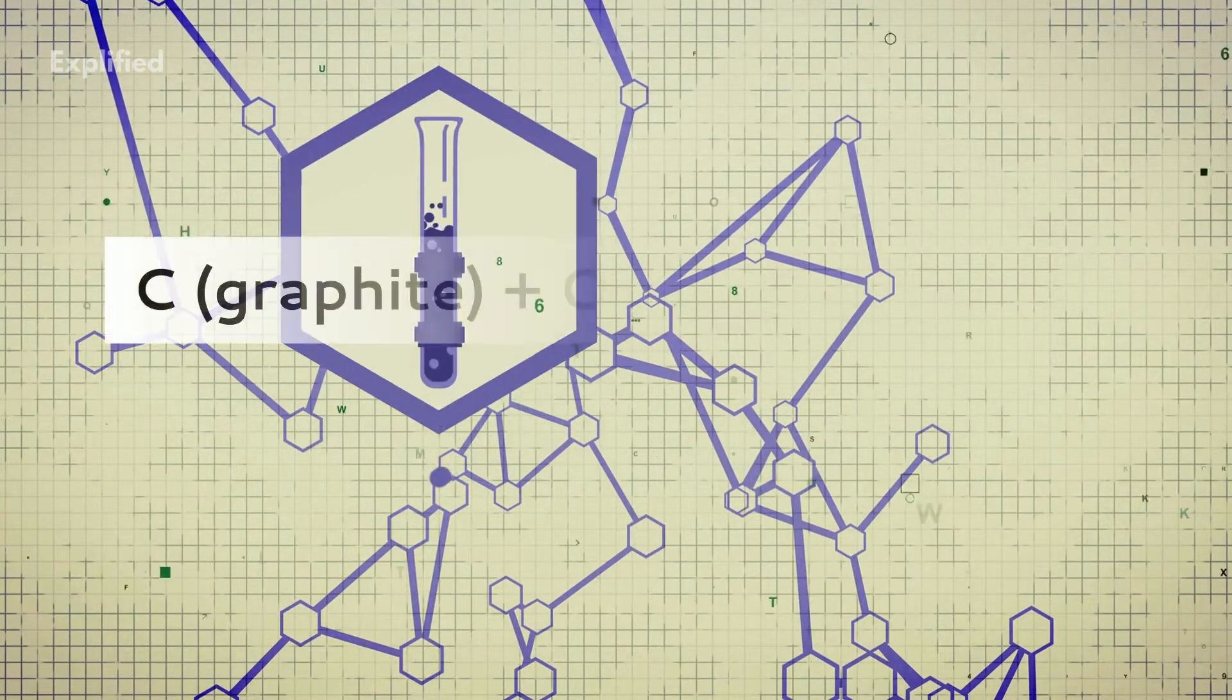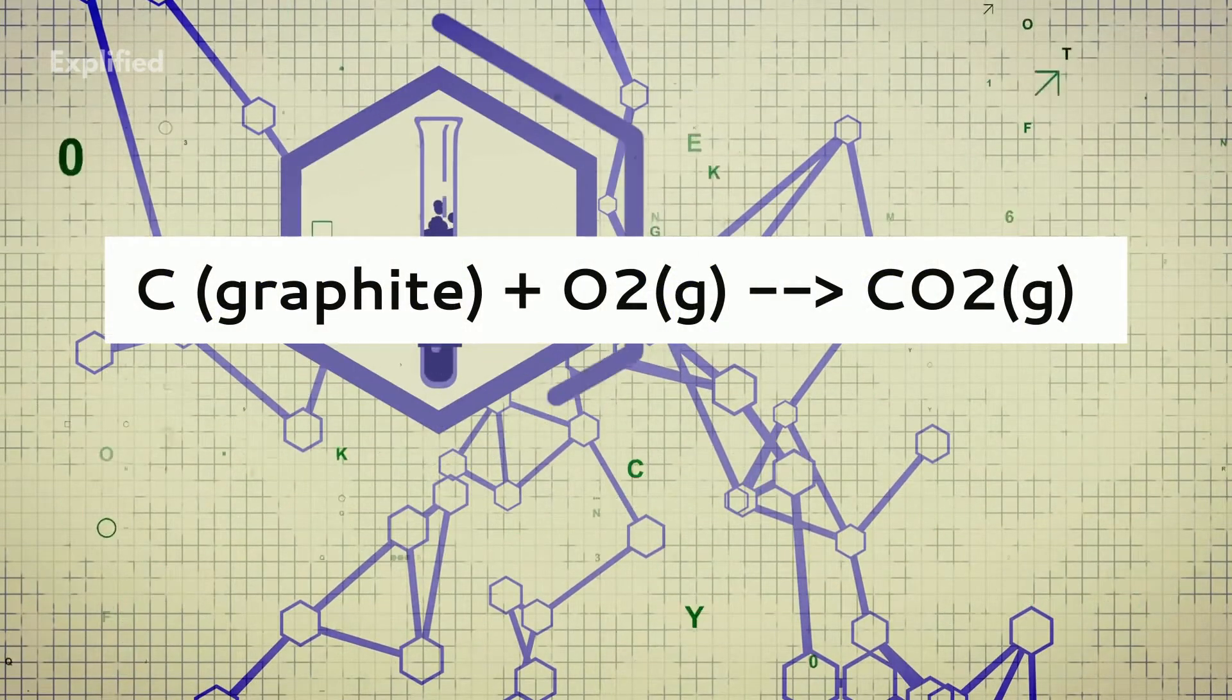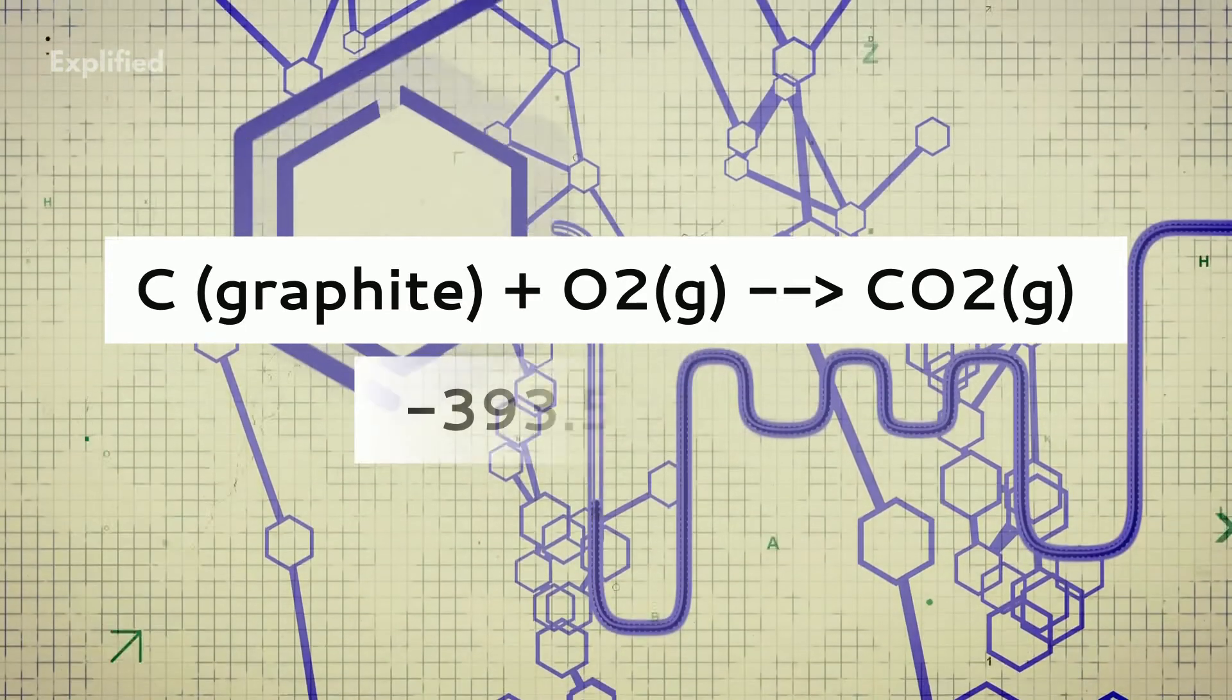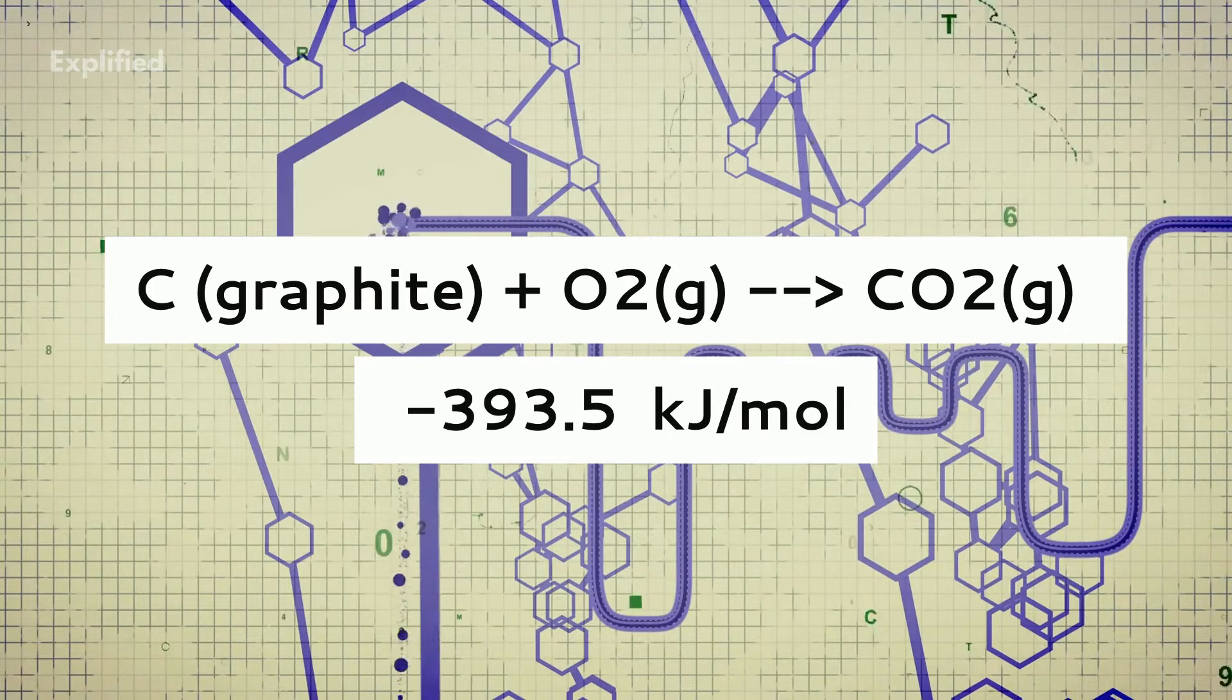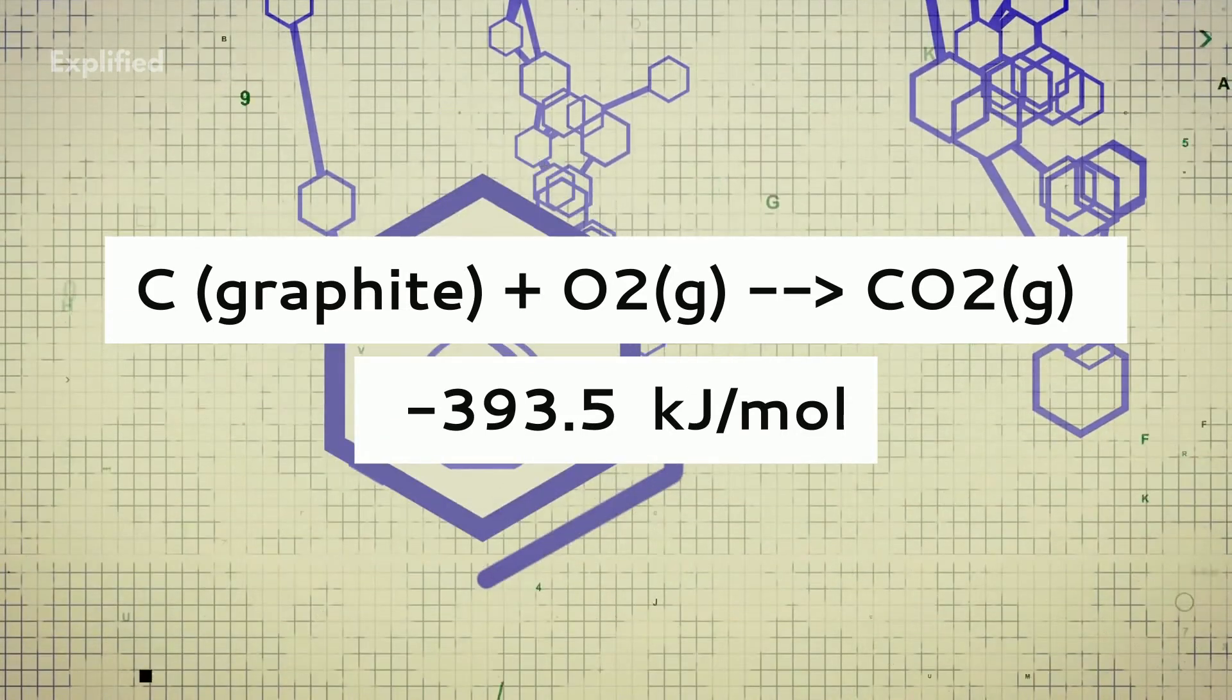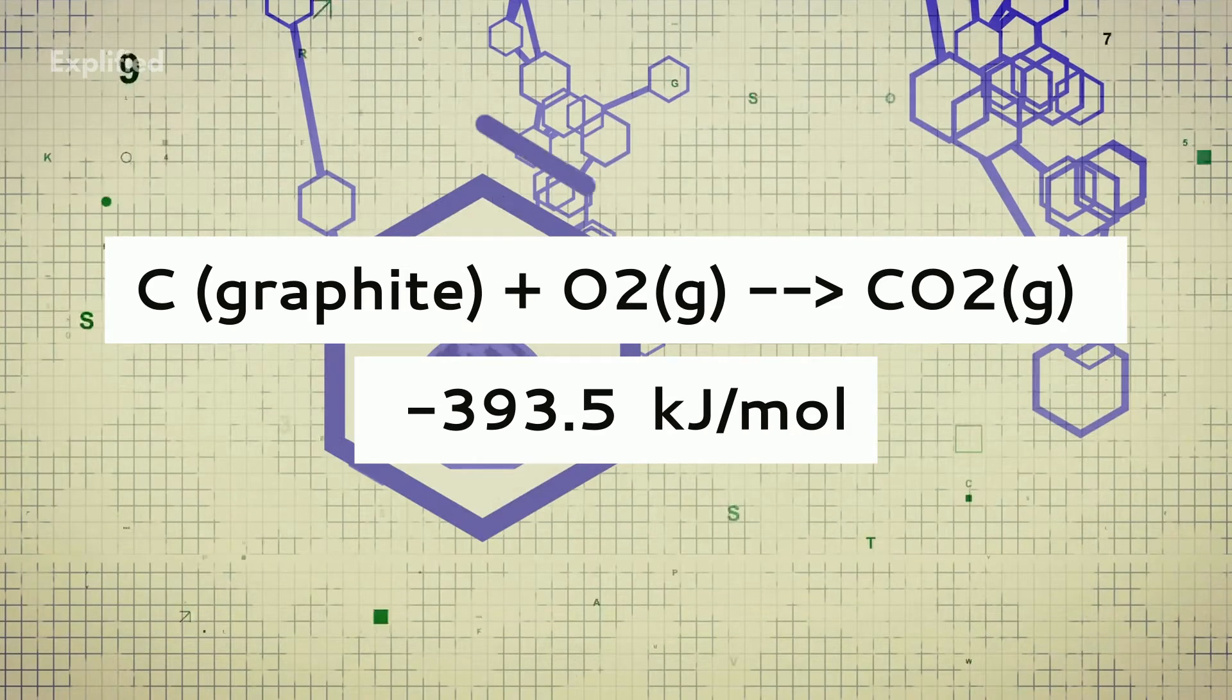For example, the standard enthalpy change of the reaction, C plus O2 gives CO2, is equal to minus 393.5 kilojoules per mol. This value can be determined with the help of a calorimeter.